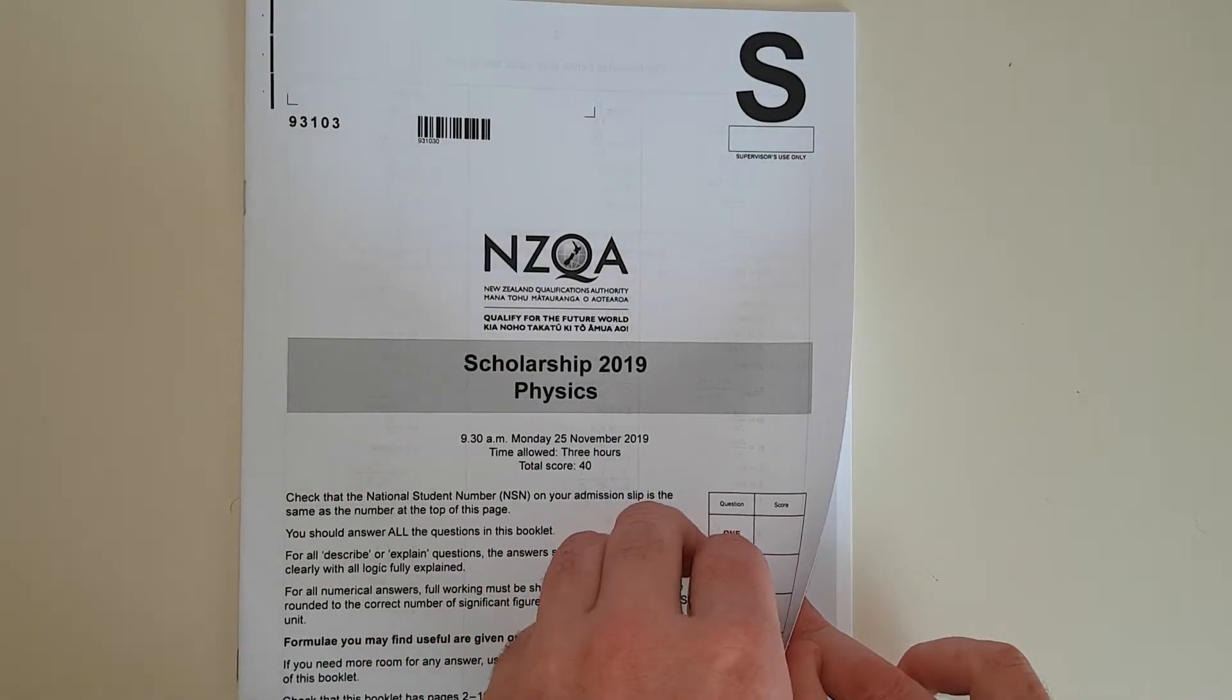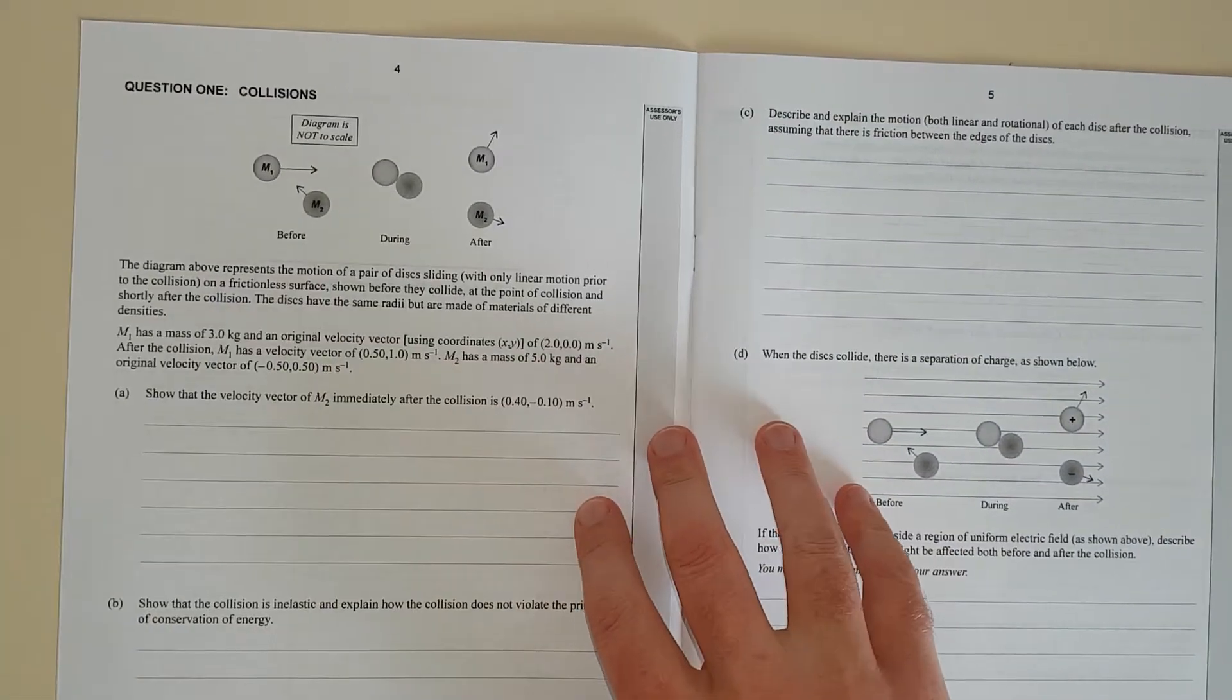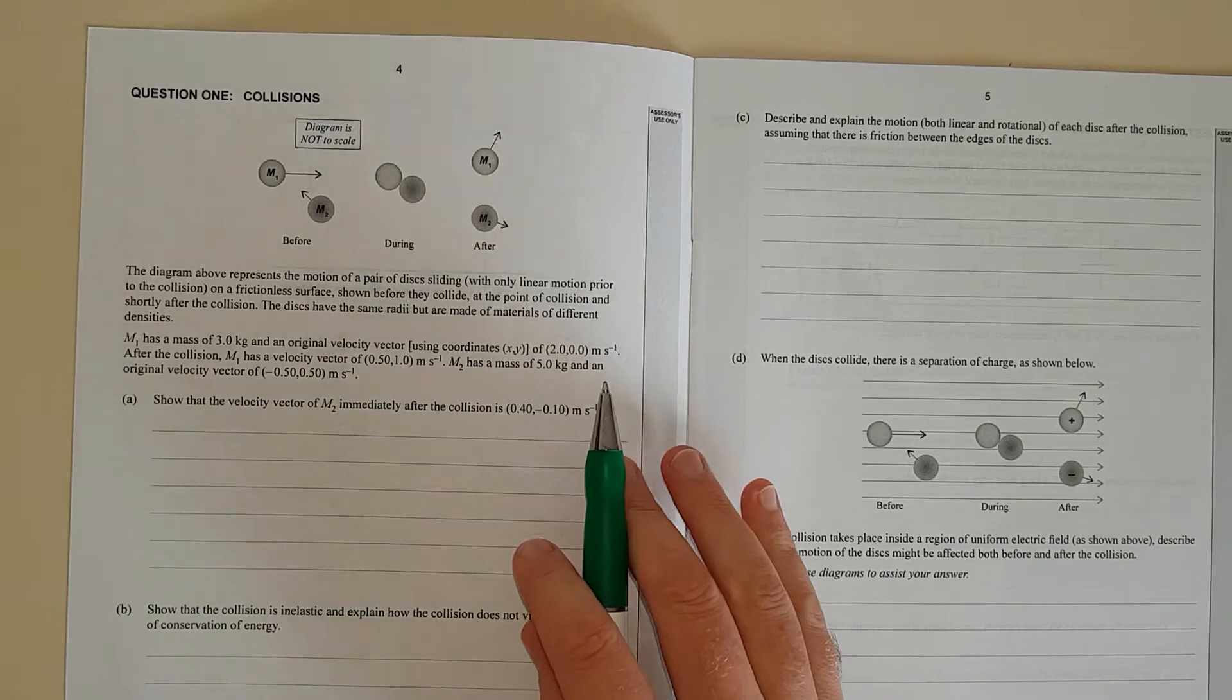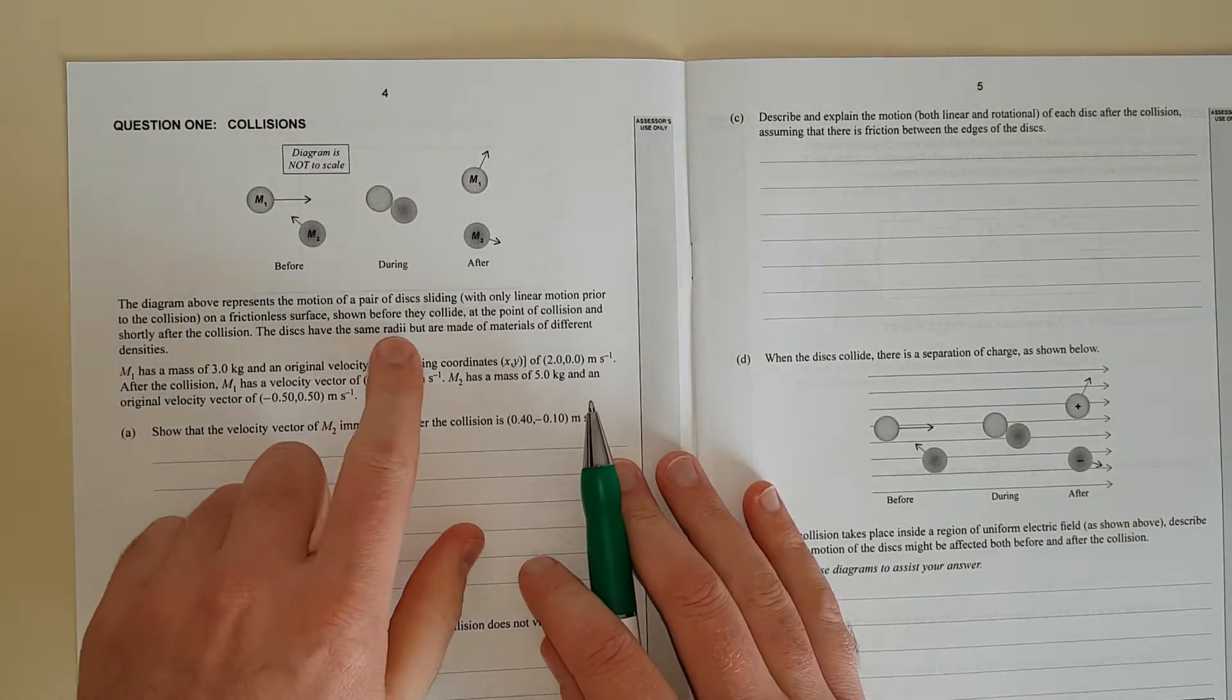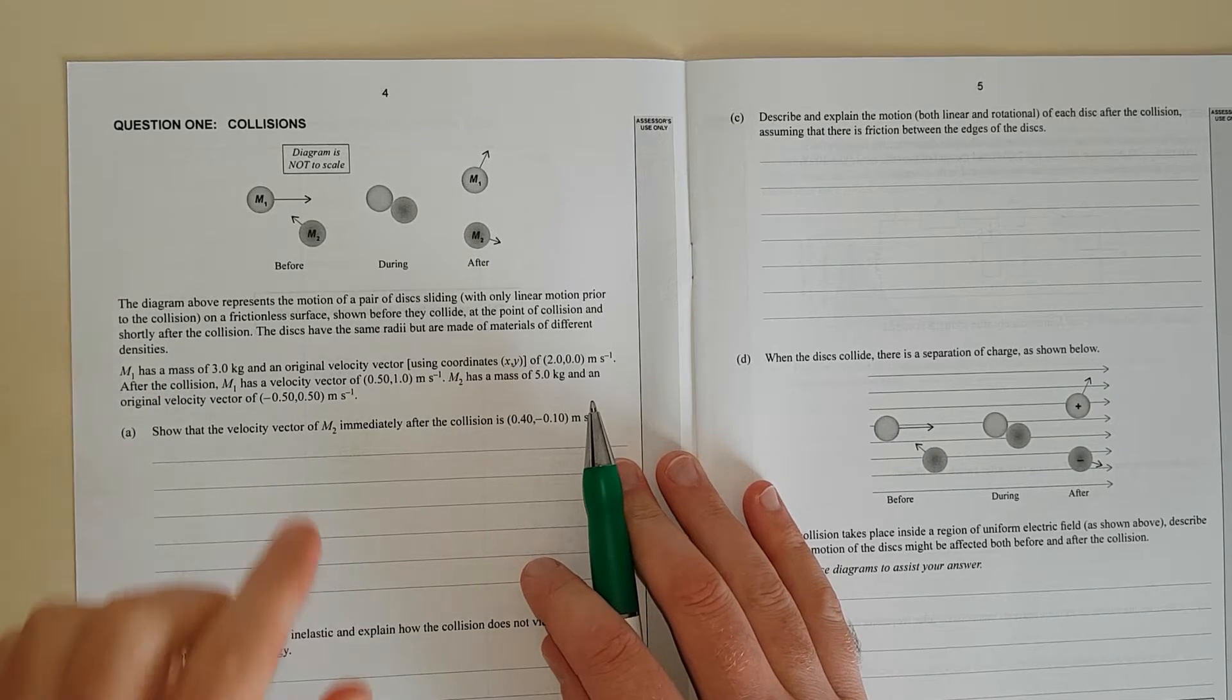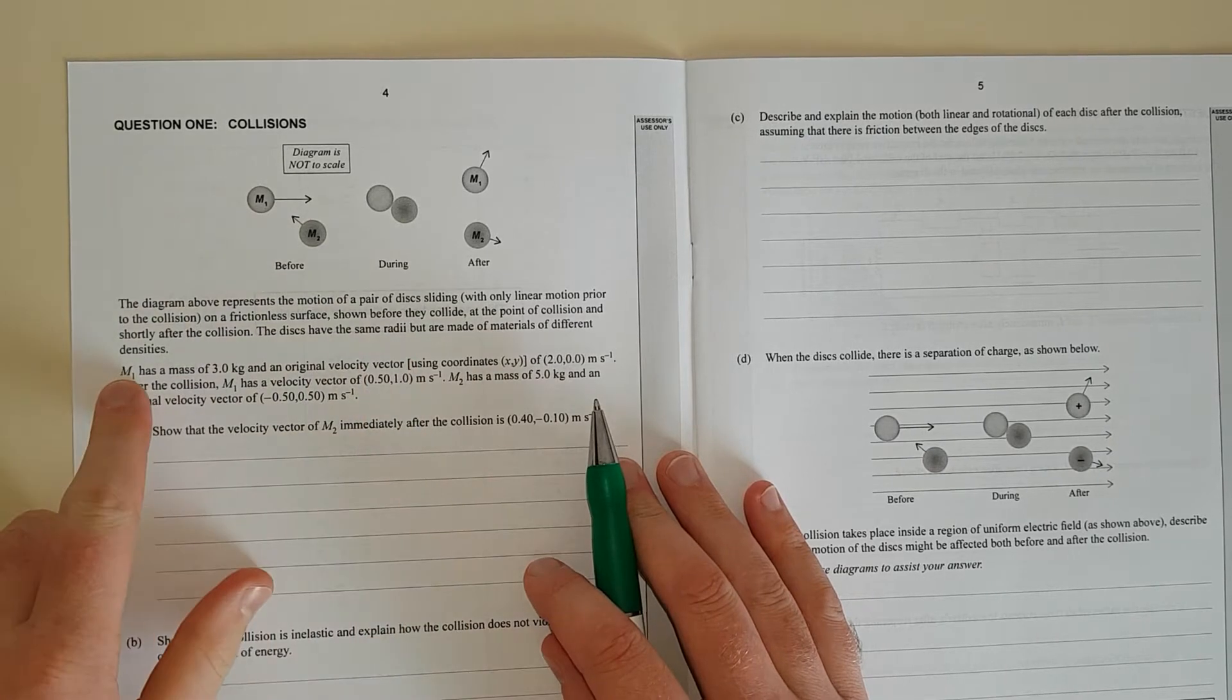This video is question 1 of the 2019 scholarship exam. The diagram represents the motion of a pair of discs sliding with only linear motion prior to collision, with friction on the surface. At the point of collision and shortly after, the discs have the same radii but are made of materials of different densities.